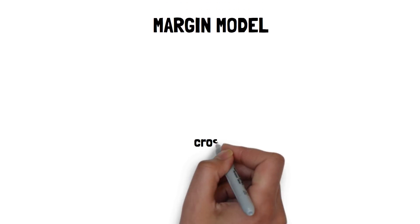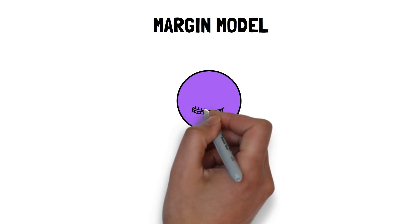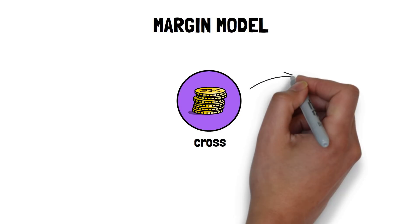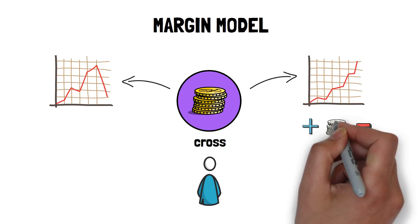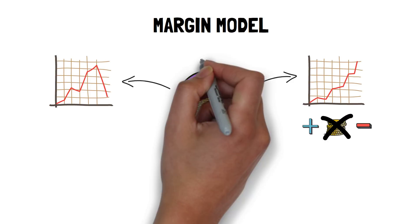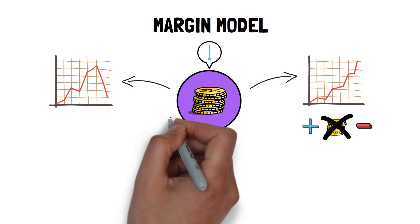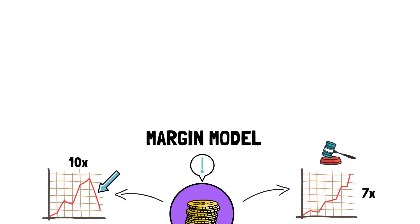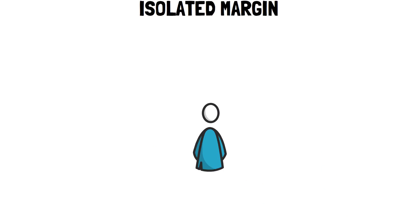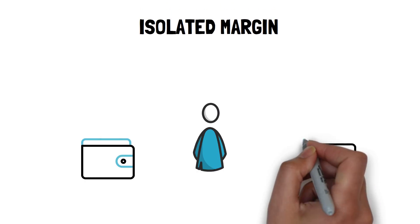When it comes to the margin model, Perpetual Protocol uses cross margin, which means that the user's funds are kept in one pool and all of their positions use this pool as collateral. This makes managing collateral easier since the user doesn't need to add or remove margin for each position, but has to be used with caution, as in this mode one position can affect other positions. If the user has several highly leveraged positions, one position that goes against the user can cause others to be at risk and face possible liquidations. The users also have a way of using isolated margin mode by creating separate wallets for each of their positions.